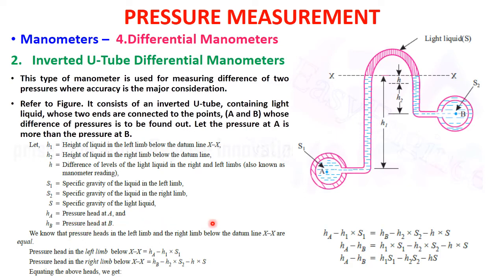For the inverted U-tube manometer, pressure head in the left limb equals Ha − H1·S1, and pressure head in the right limb equals Hb − H2·S2 − H·S, since all levels are measured below the datum line. Equating and rearranging: Ha − Hb = H1·S1 − H2·S2 − H·S. This is the equation for calculating the pressure head difference in an inverted U-tube manometer, used for lower or vacuum pressures.